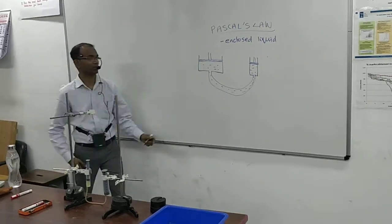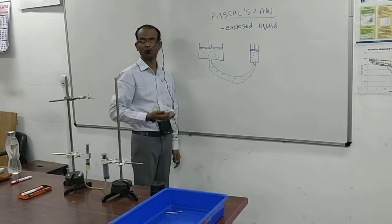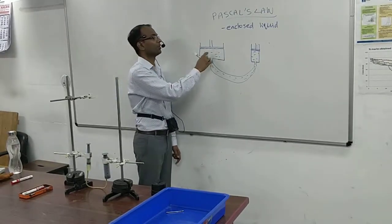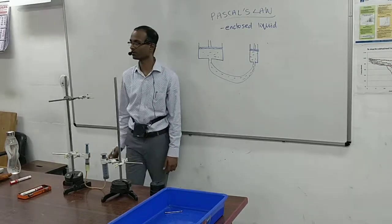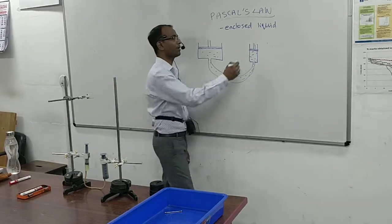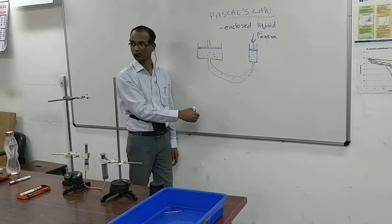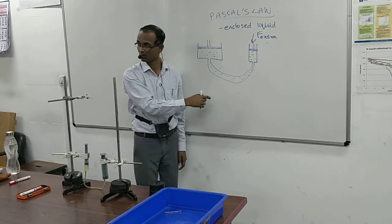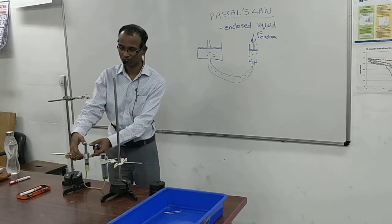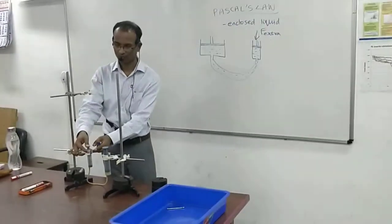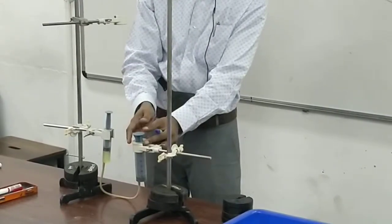Now this liquid is enclosed. Imagine these two pistons have negligible weight, so the pressure on top of both liquids is equal. If I apply some extra force here, this piston will go down, and the other piston will rise. Let us see whether it happens — I am pressing it, and it is rising. Similarly, if I press the other side, it will rise here.